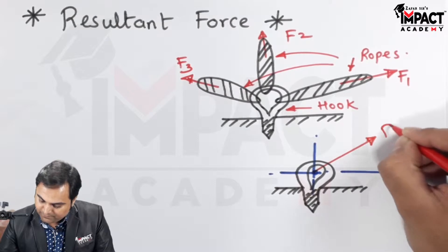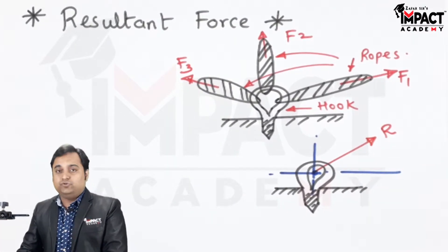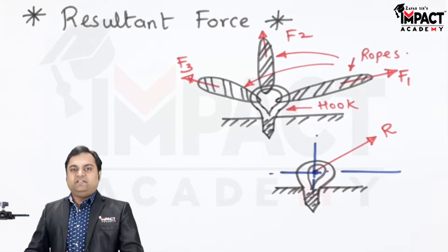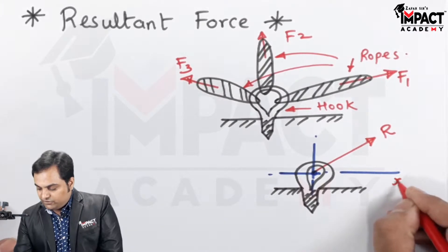This is just my assumption, because I am just explaining the concept here. We don't have values, so we do not know which would be the direction for the resultant. And this is an assumption that the resultant is acting in the first quadrant.